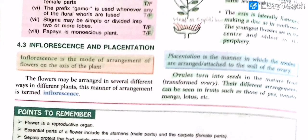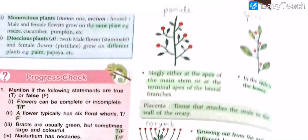Moving on to inflorescence and placentation. Inflorescence is the mode of arrangement of flowers on the axis of a plant. Flowers can be arranged in several different ways in different plants, and this manner of arrangement is termed inflorescence. Flowers may appear singly at the apex of the main stem or at the terminal apex of lateral branches.